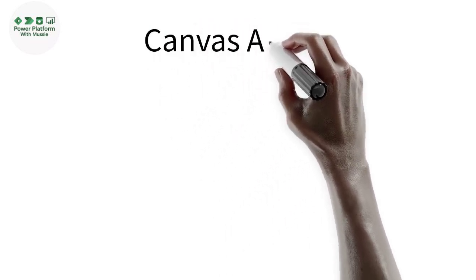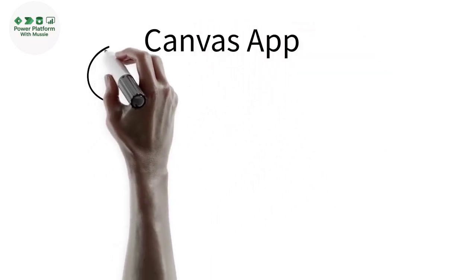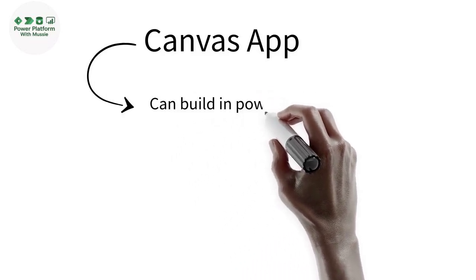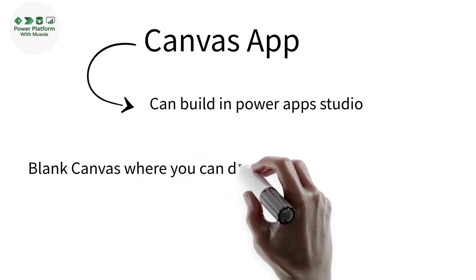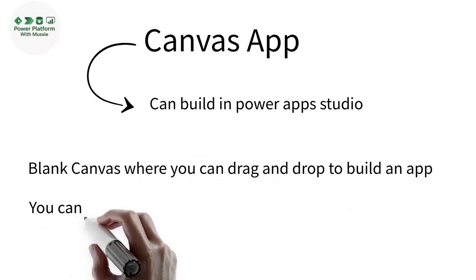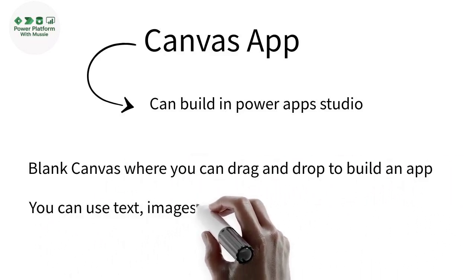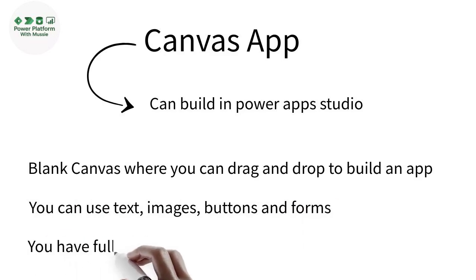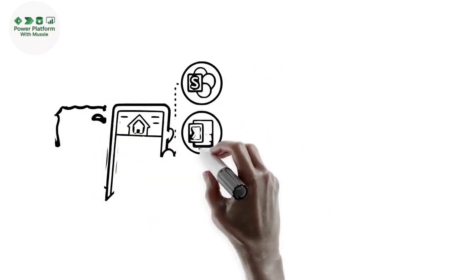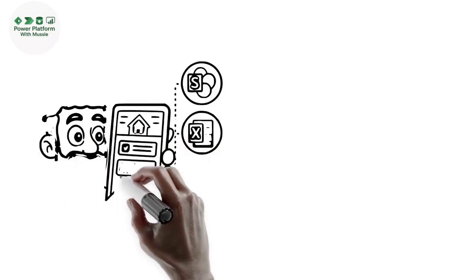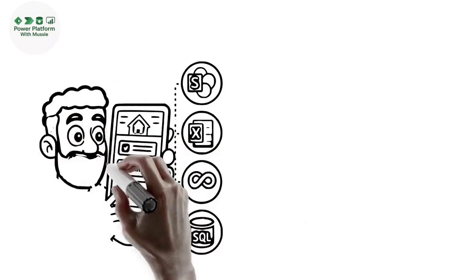Let's start with Canvas apps. A Canvas app is a business application that you can build in Power Apps Studio. It is a blank canvas where you can drag and drop buttons, text, images, forms, and other elements exactly where you want them. You have full control over the user interface, and you can design a pixel-perfect app. It's similar to designing a PowerPoint slide — you build the user interface to your exact specifications.